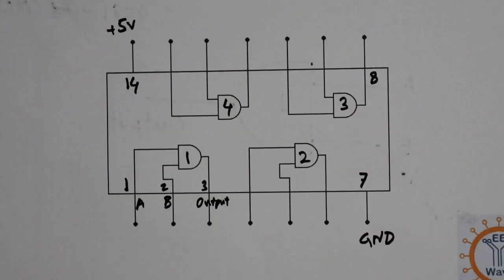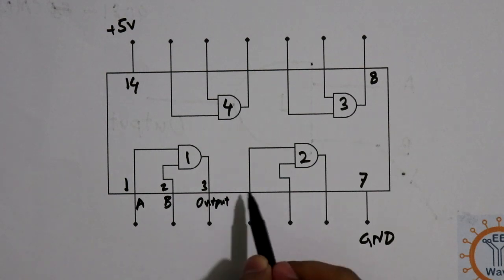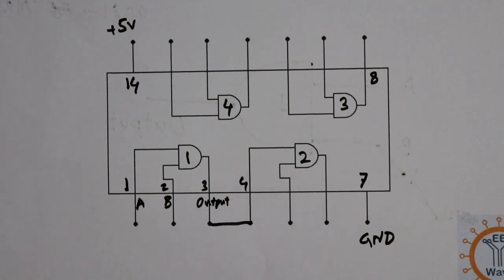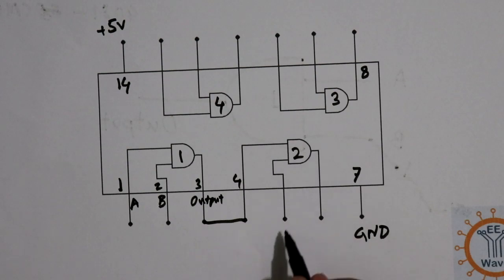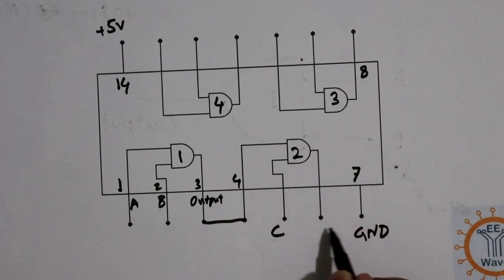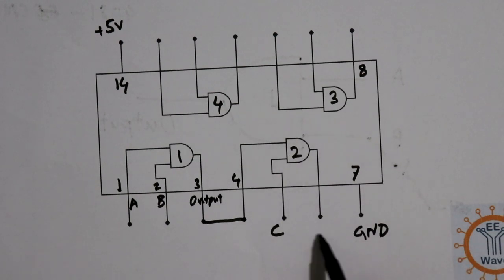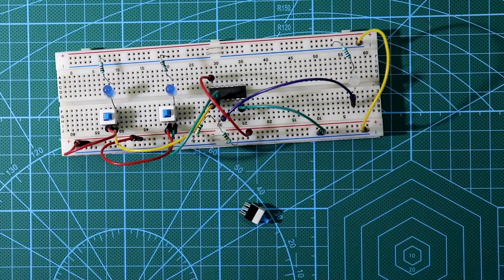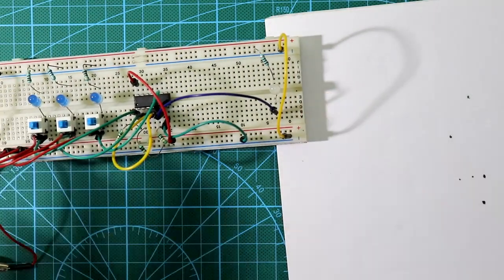If you need a three input AND gate or four input AND gate, just connect pin number 3 and pin number 4 together and provide input C there. So inputs are A, B, C and we get the output from this AND gate. For three input we need one extra switch, one input LED, one pull-down resistor, and one 100 ohm resistor for the LED.